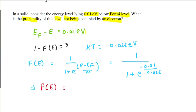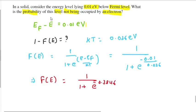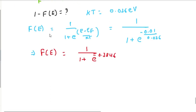F(E) equals 1 over 1 plus exponential of 0.01 divided by 0.026, which simplifies to 0.38246. This is the probability of finding the electron.